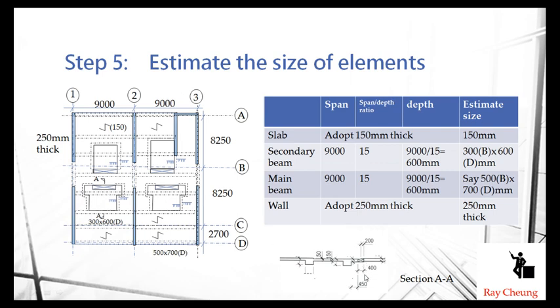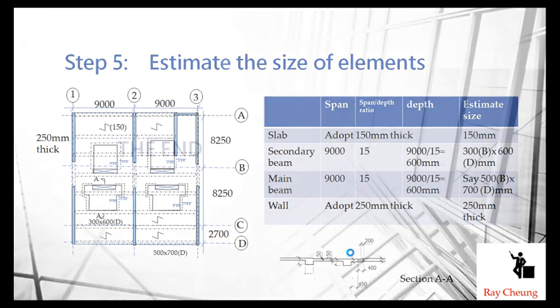And then you can see the opening for the pipe passing through, and then you can see the slab lowered down a little bit, just 50 for the casting of the pipe duct. Thank you.